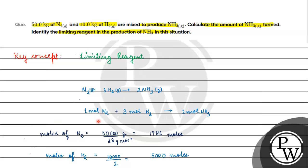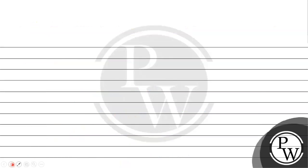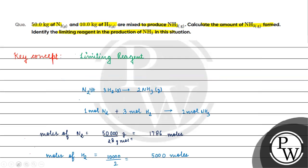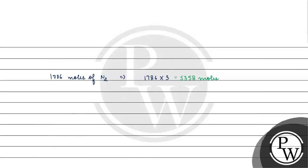Ek mole nitrogen ke liye teen mole hydrogen ki zarurat parti hai. Toh agar hamare paas hoga one thousand seven hundred eighty-six moles of nitrogen, toh kitne moles hydrogen ki zarurat parti hai? One thousand seven hundred eighty-six into three — hamare paas kya barabar hota hai? Five thousand three hundred fifty-eight moles. But hamare paas moles of hydrogen kitna hai? Five thousand hi hai. Yaani hydrogen jo hai, woh hamare paas kam amount mein present hai.